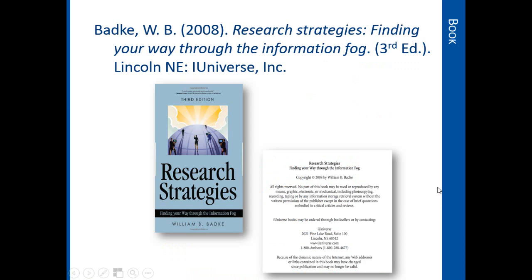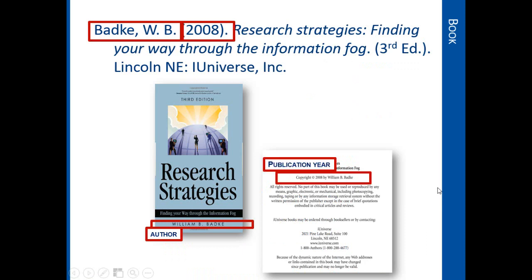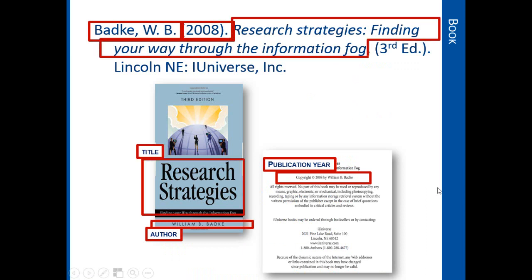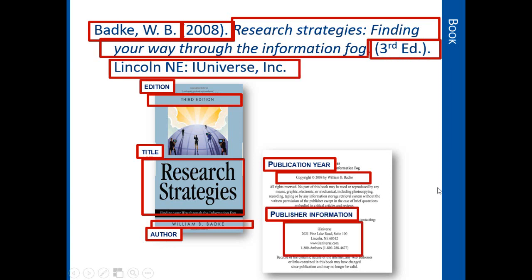For a book, we begin with the author's last name, followed by just their initials. Then we add the year of publication, and then the title of the book, which is in italics. If the edition is available, you can add that next. Finally, it's the publisher information, which is the place of publication and then the publisher's name.